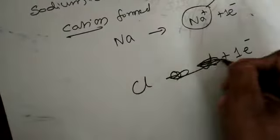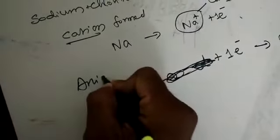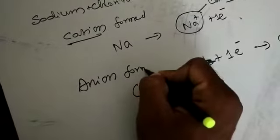Cl takes that one electron given by the sodium and becomes Cl-. This is nothing but an anion. So anion formation is happening.